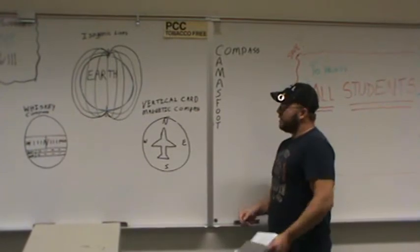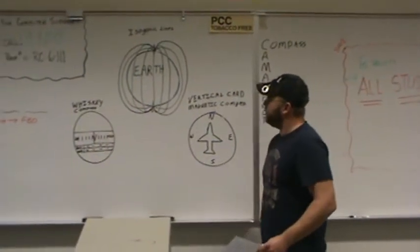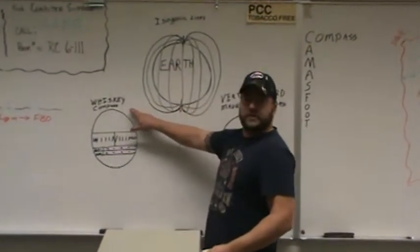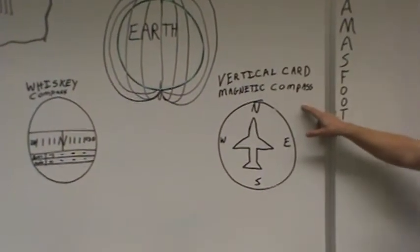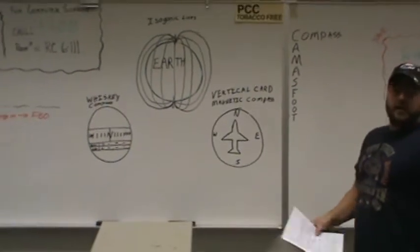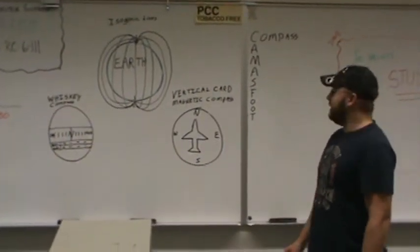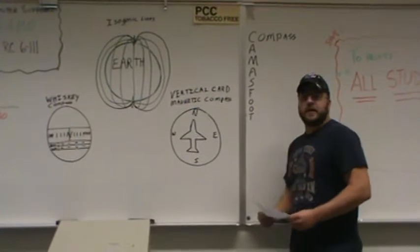There are two types of magnetic compasses that we use. One, the whisky compass and the vertical card magnetic compass. Anybody who has used both, I can guarantee, prefers a vertical card magnetic compass.